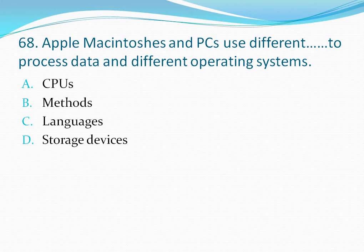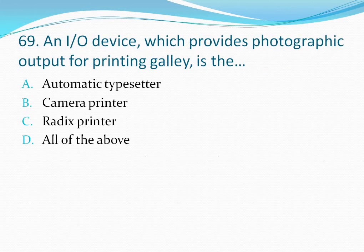Question number 68: Apple Macintoshes and PCs use different — to process data and different operating systems. Your options are: option A CPU, option B methods, option C languages, option D storage devices. The correct answer is option A — CPUs.